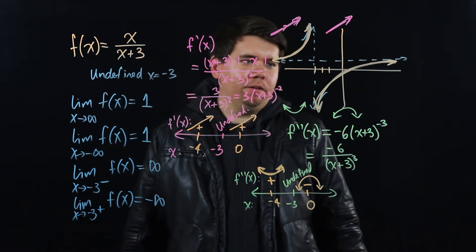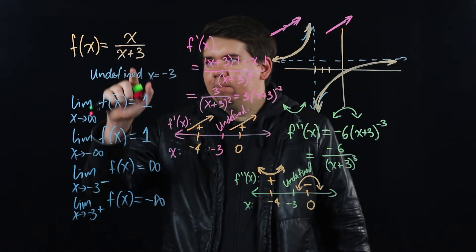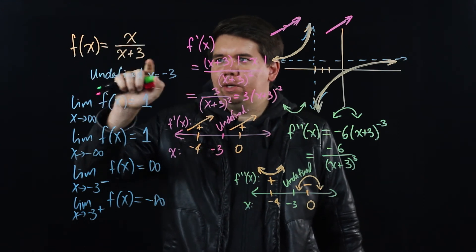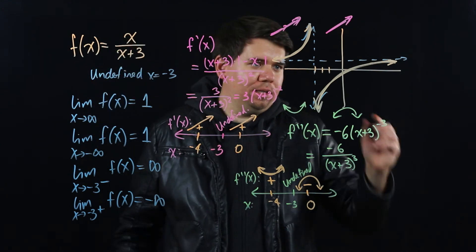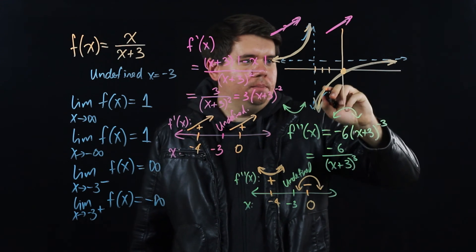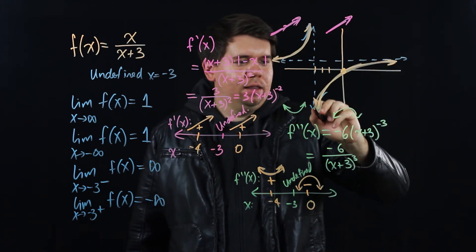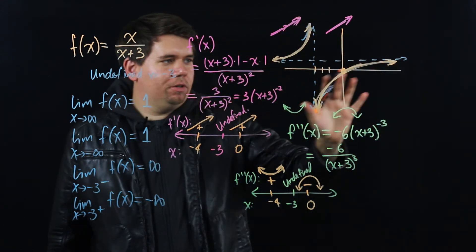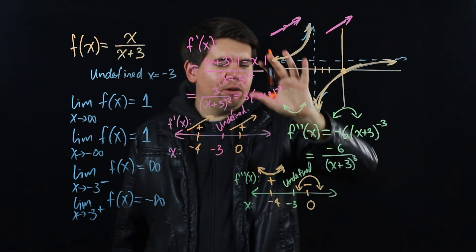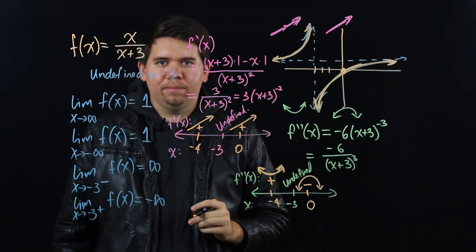You can go ahead and plug in a few points to be more exact. For example, when x = 0, the function equals 0, so the graph passes through the point (0, 0). But the general shape of the graph is now clear from our analysis.